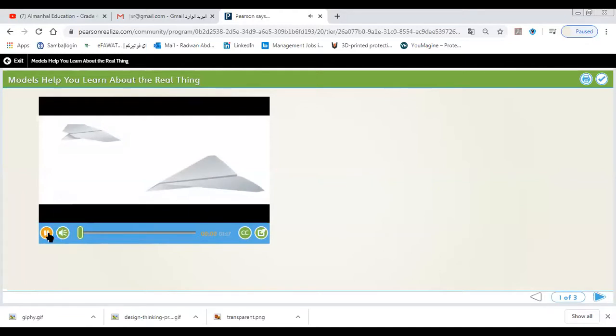How can a model help us learn about the real thing? Observe the two model airplanes. They both have different wing designs. Let's test each plane to find out which will fly the furthest.